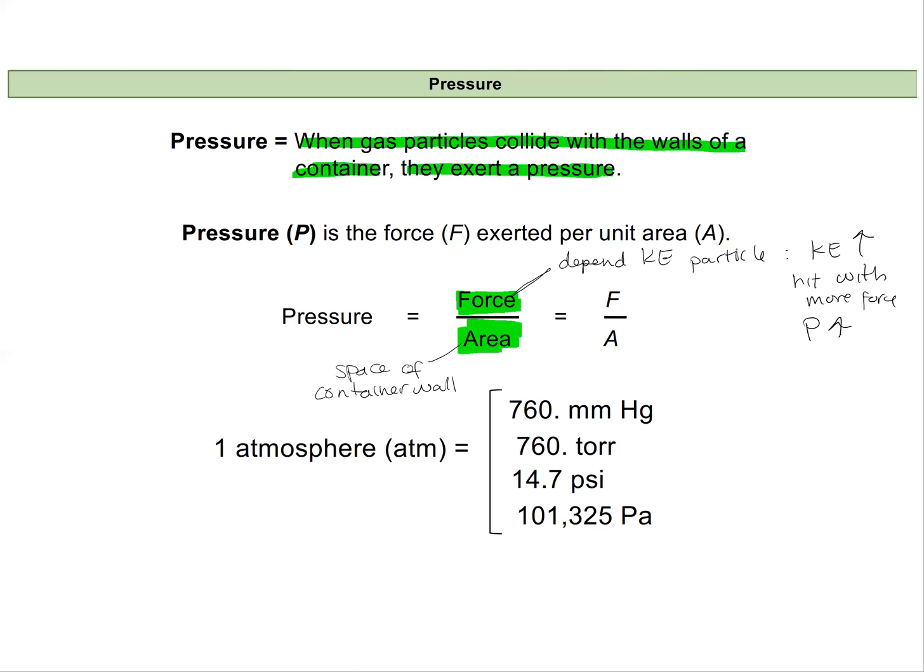And as I said, we have a lot of different units that we use for pressure. In the chemistry lab, we use atmospheres the most and millimeters of mercury. Millimeters of mercury we use a lot because we still measure pressure using mercury barometers.